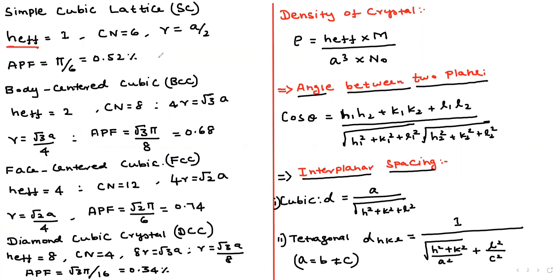The key points: for simple cubic, the effective number of atoms per unit cell is 1, coordination number is 6, and radius formula is r = a/2. For BCC, effective atoms = 2, coordination number = 8, and the radius formula comes from 4R = √3·a, so R = √3·a/4.